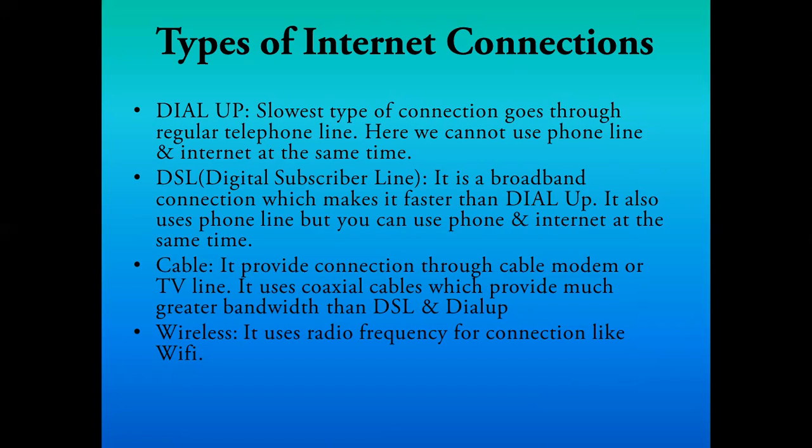DSL — Digital Subscriber Line — is similar to dial-up but uses two different wires: one for the phone line and one for the internet, so both can be used at the same time. This type of connection is known as broadband and is faster than dial-up.